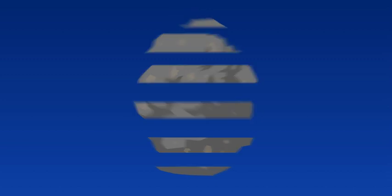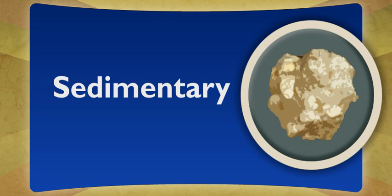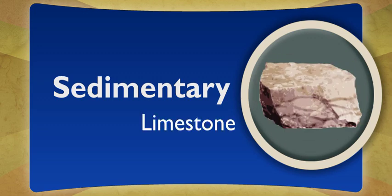Erosion moves it around and deposits it in new places where the mix of pieces gets smushed together into chunks. These chunks are called sedimentary rocks. Limestone is a sedimentary rock. And then?